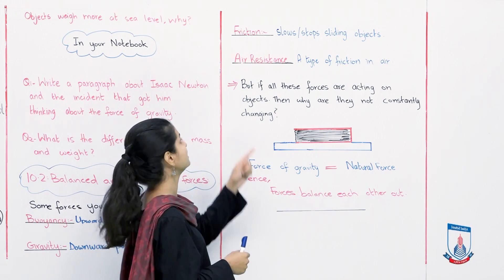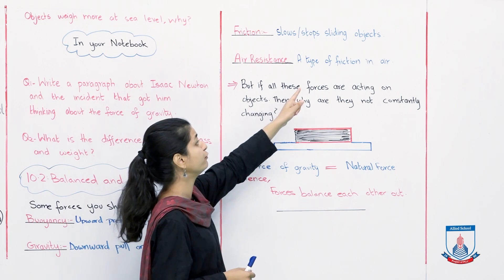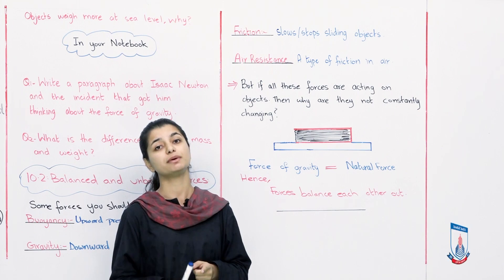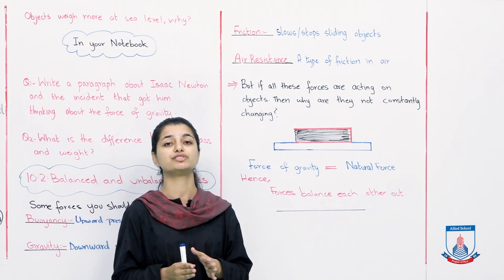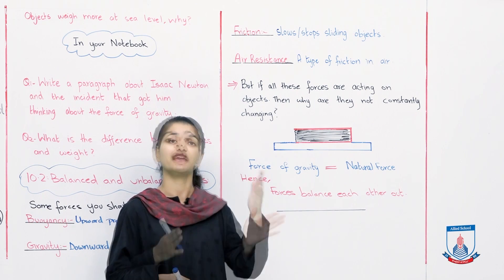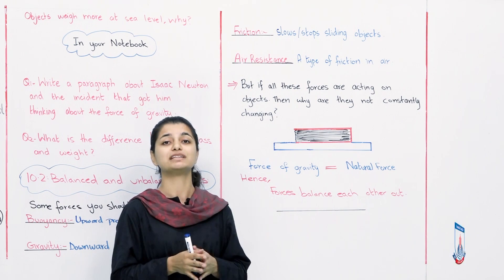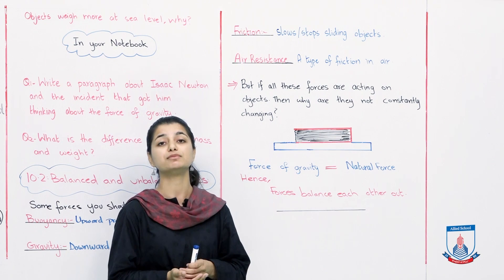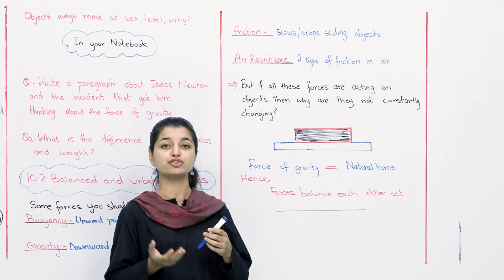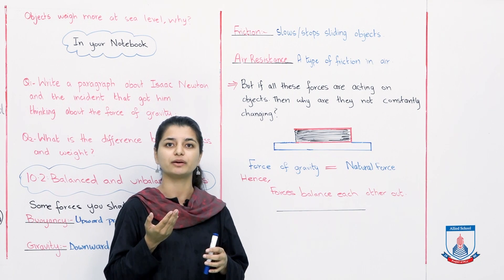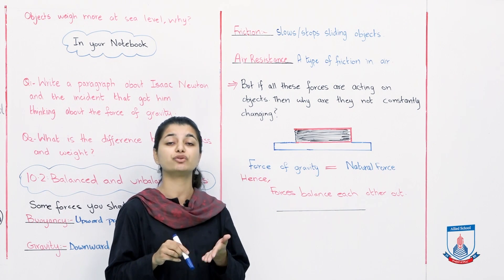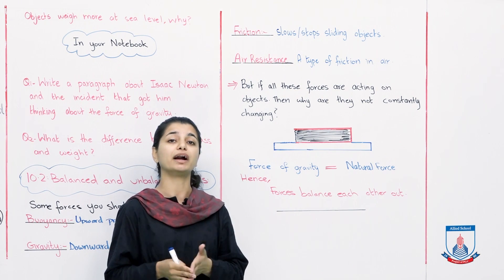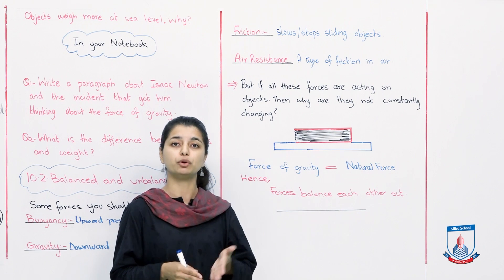But let's read the second force, that is air resistance, a type of friction in air. In air resistance what happens is exactly like friction, but in this the two objects don't rub against each other visibly. In this, air and object rub against each other. For example, if I drop this marker down. So after some time, it comes to a halt, it slows down. What is the reason why the pressure of the air is hitting it? And we call it air resistance, that air is resisting its movement, its speed. So the marker or any object that you throw down, will slow down.